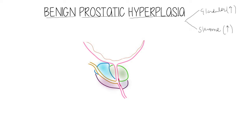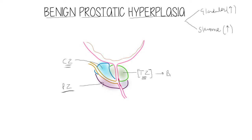Surgeons divide the prostate gland into different zones. The part present in the periphery is called the peripheral zone. The zone occupying the center is called the central zone, and an ejaculatory duct passes through it into the urethra. The urethra is surrounded completely by yet another zone called the transition zone.